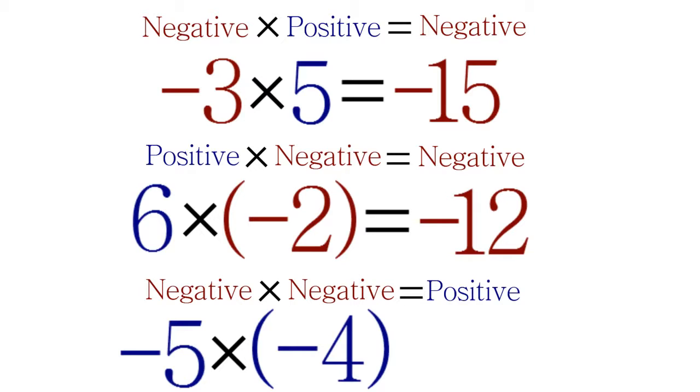numbers are negative, the result will be a positive number. To find this number, multiply 5 × 4 = 20. So -5 × (-4) = 20.